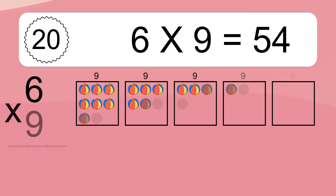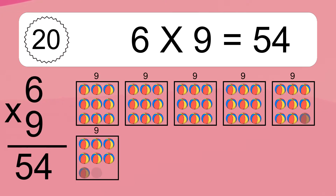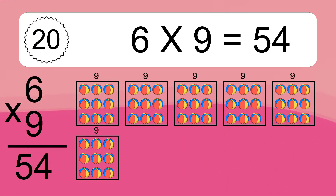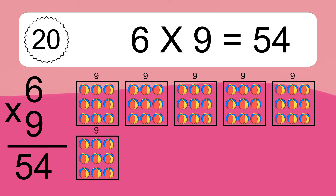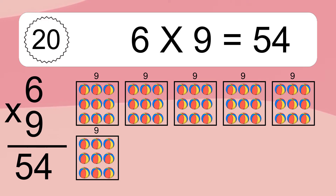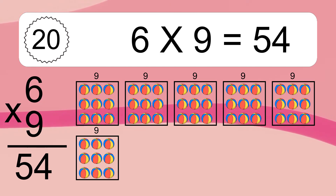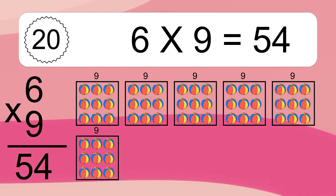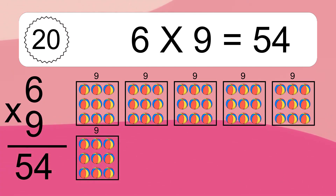6 times 9 equals what? 6 times 9 equals 54. We have 6 boxes, and each box has 9 colorful balls inside. If you count all the balls in all the boxes together, you will have 6 times 9 balls. This equals 54 balls.